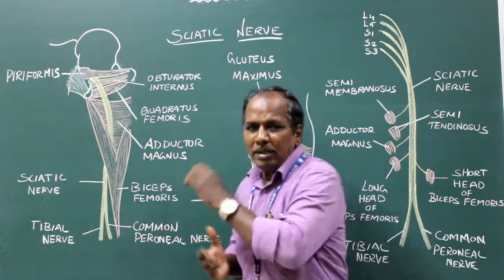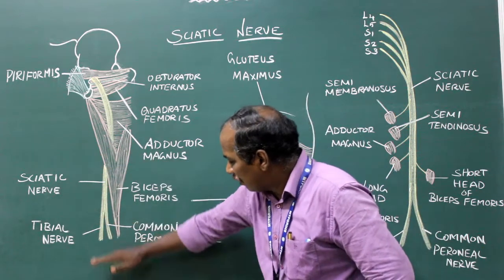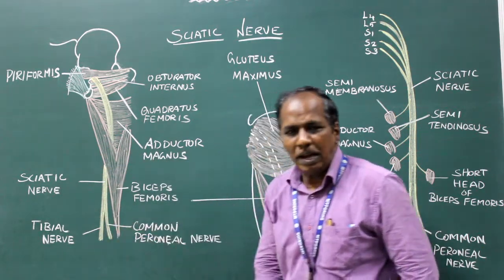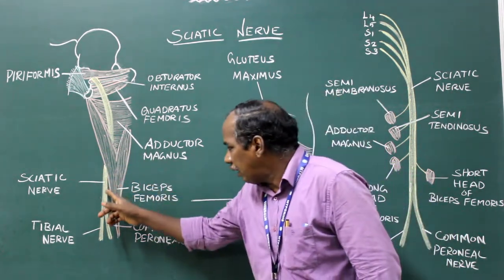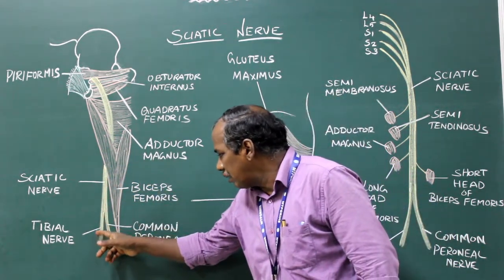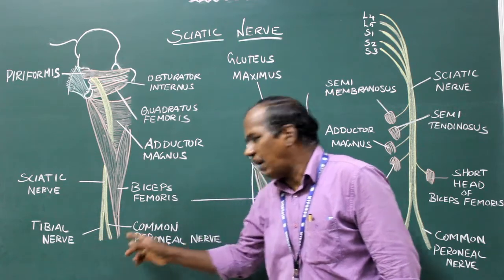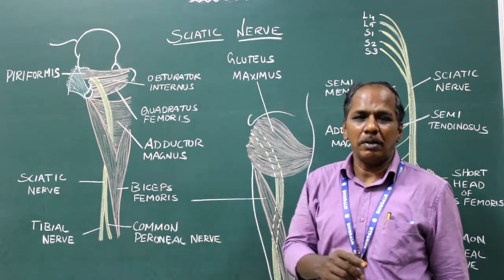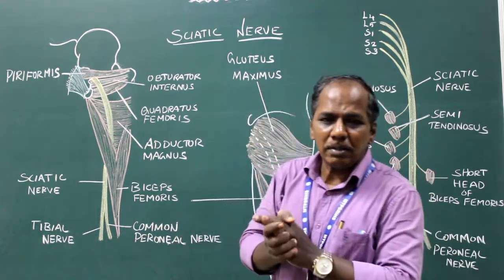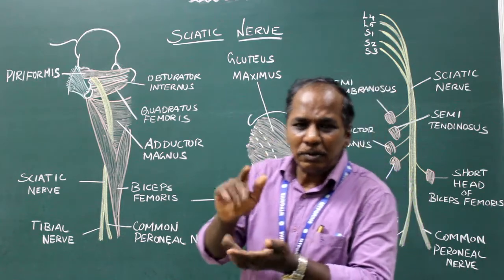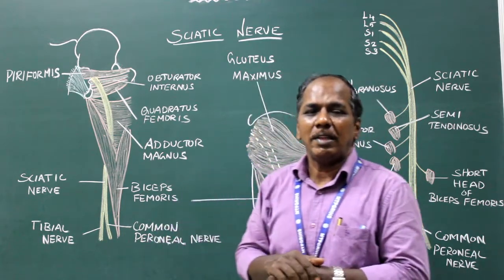At the junction of the upper two-thirds and lower one-third of the thigh, the sciatic nerve divides into the tibial nerve and the common peroneal nerve.